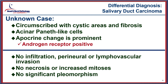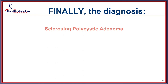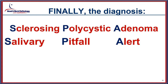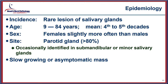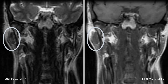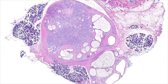We finally arrive at sclerosing polycystic adenosis — or sclerosing polycystic adenoma — which is the diagnosis in this case. Taking the first letters of the PIMP mnemonic leads you to the correct diagnosis. Sclerosing polycystic adenoma is a neoplastic proliferation combining features of intercalated ducts, sclerosing adenosis, apocrine adenosis, salivary duct carcinoma, and fibrocystic changes of the breast. It is quite rare, females slightly more often affected, with the vast majority occurring in the parotid gland. Lesions are circumscribed but unencapsulated with a multi-nodular appearance and prominent fibrosis — the most easily identified feature, whether focal or forming hyalinized nodules.